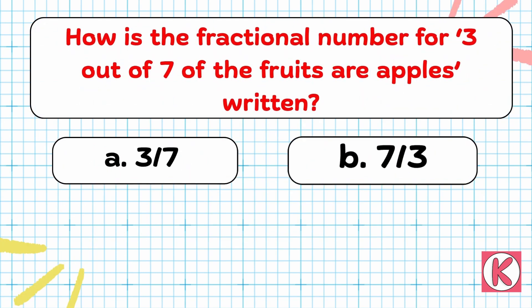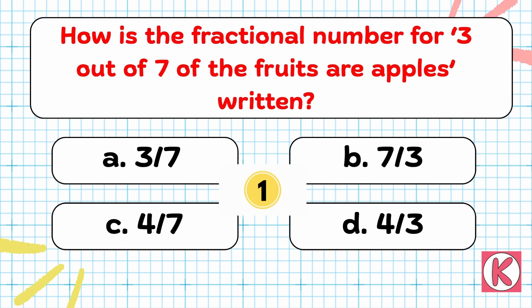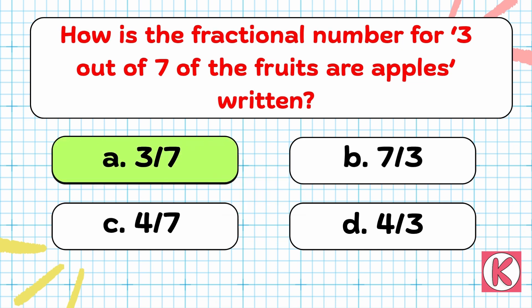Next question. How is the fractional number for 3 out of 7 of the fruits or apples written? Correct answer: Option A — 3 by 7.